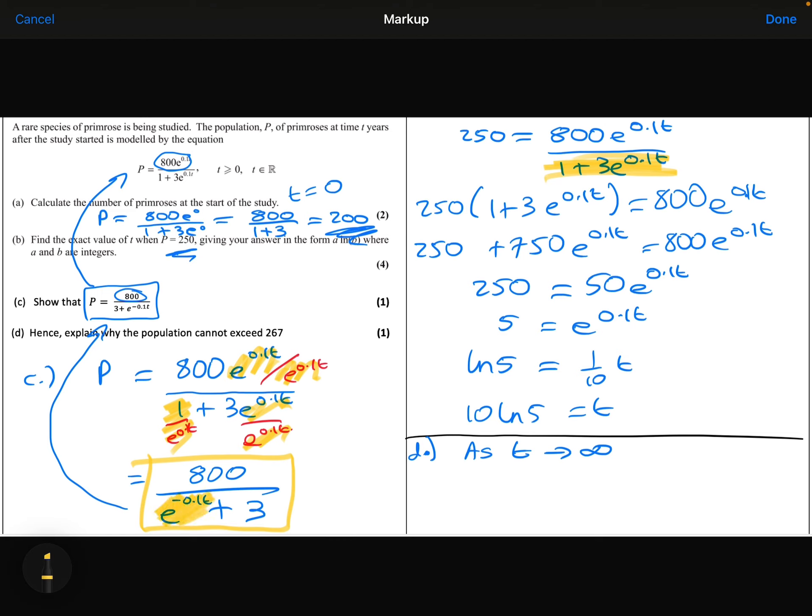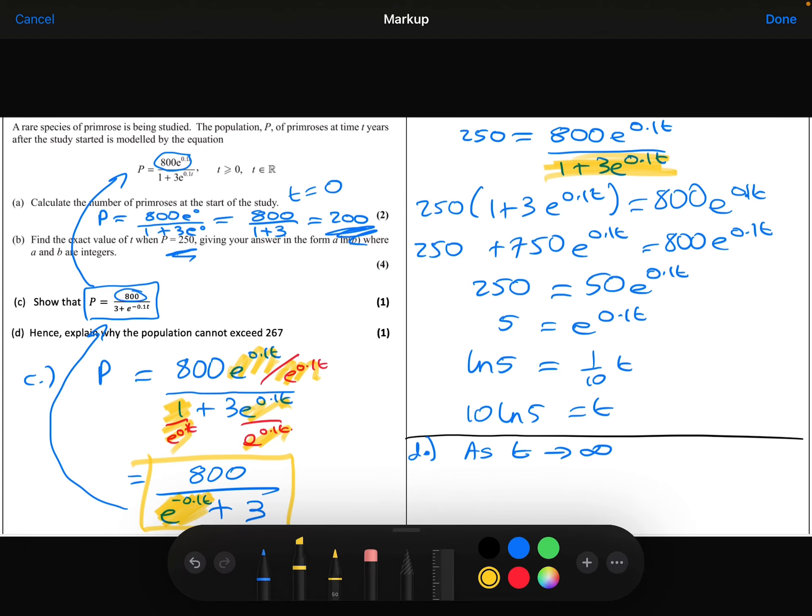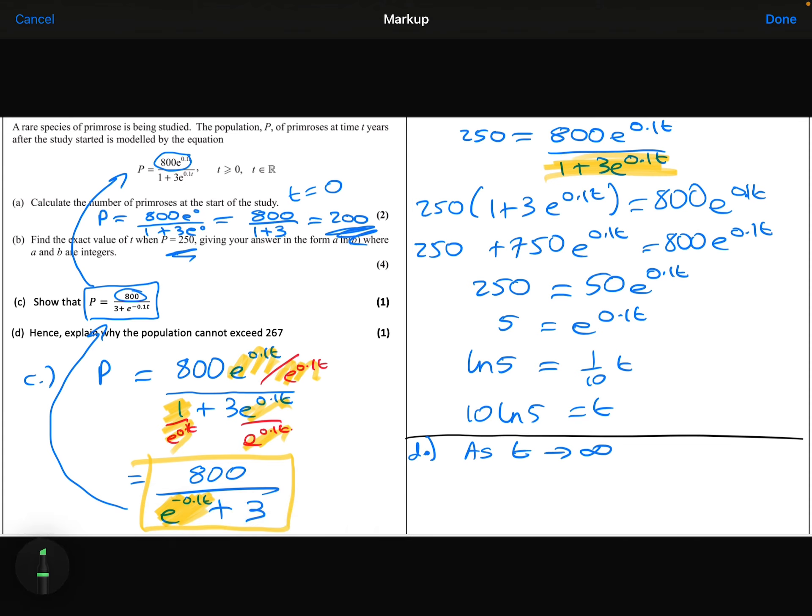Try and remember the exponential graph of e to the minus t. It looks like that. So as t becomes a large number, we can see that the exponential tends towards 0. It gets smaller and smaller. So this term here will tend towards 0.